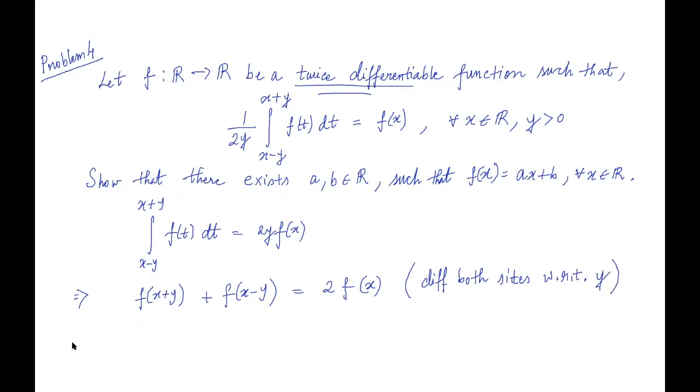So you see that f is twice differentiable so let's differentiate it once more with respect to y. So then you get f dash x plus y minus f dash x minus y equals 0. Okay, differentiating again both sides with respect to y.